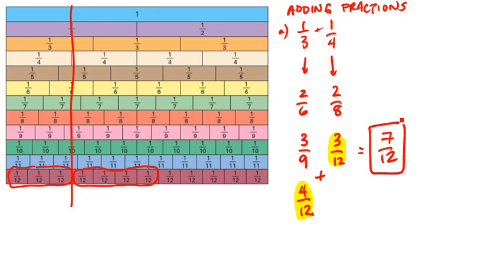That's the first way that we can use a model. The second way is by using equivalent fractions without the fraction strips. So another easy example that we'll be using is one-third plus two-fifths.